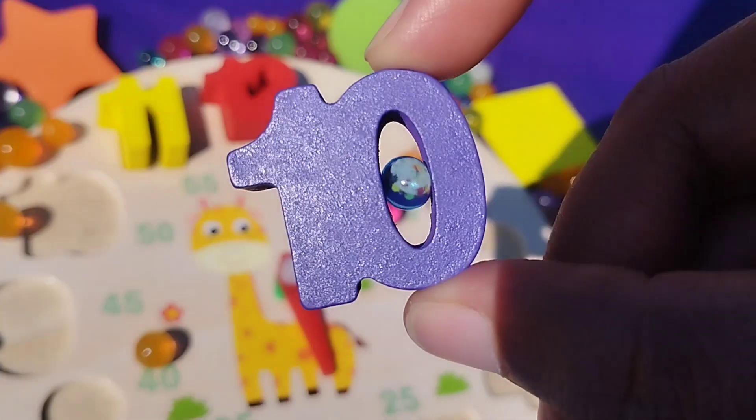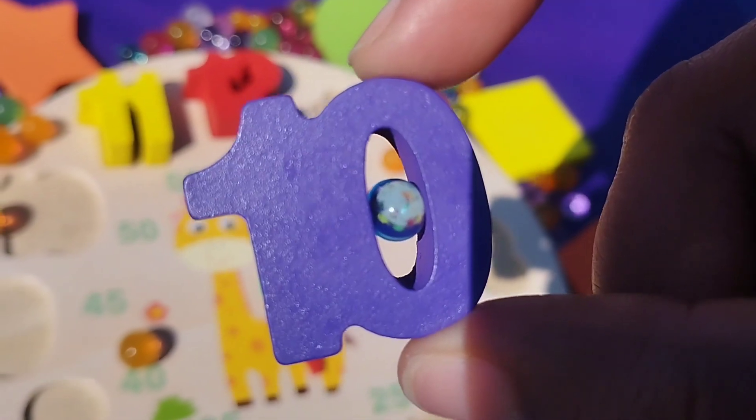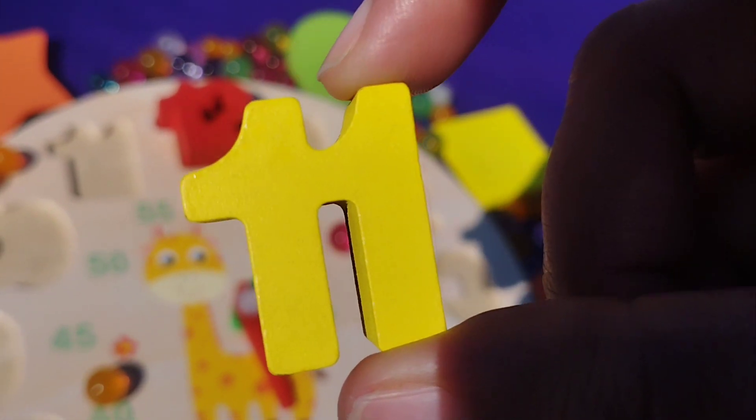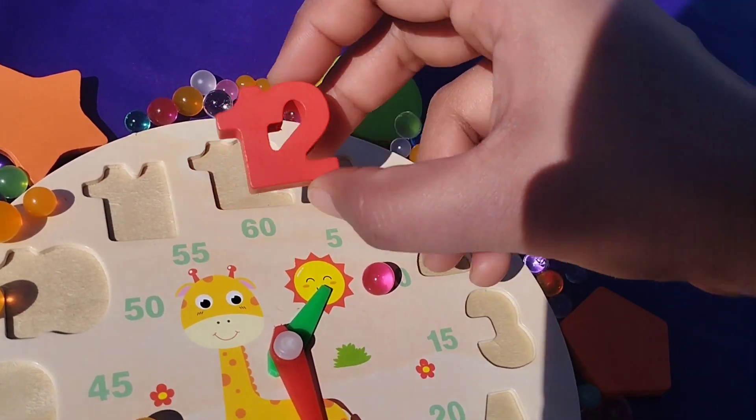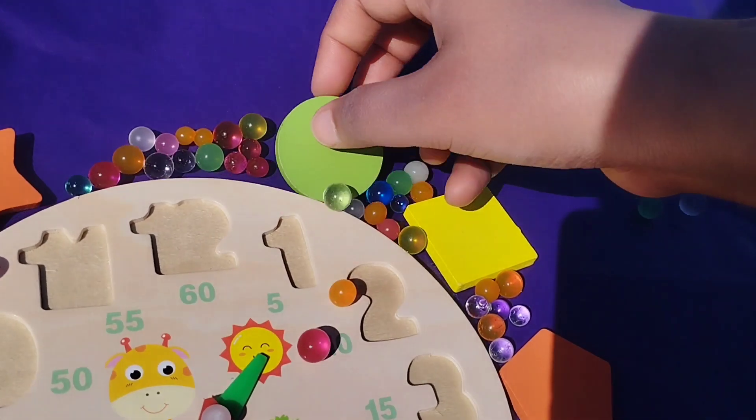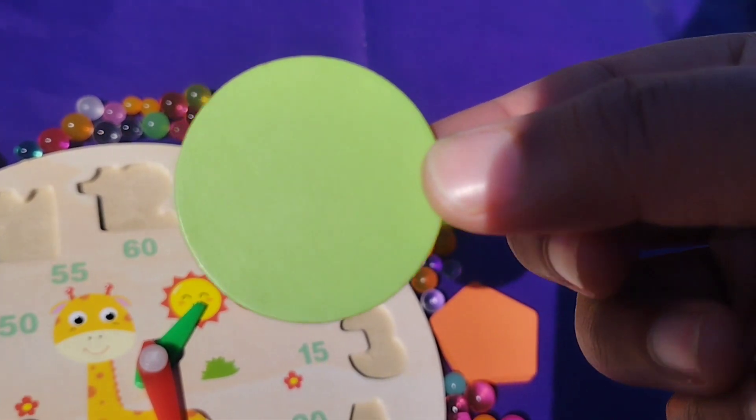The next number is number ten. One, zero, ten. Eleven. Number eleven. The next number is number twelve. Let's learn some shape's names.